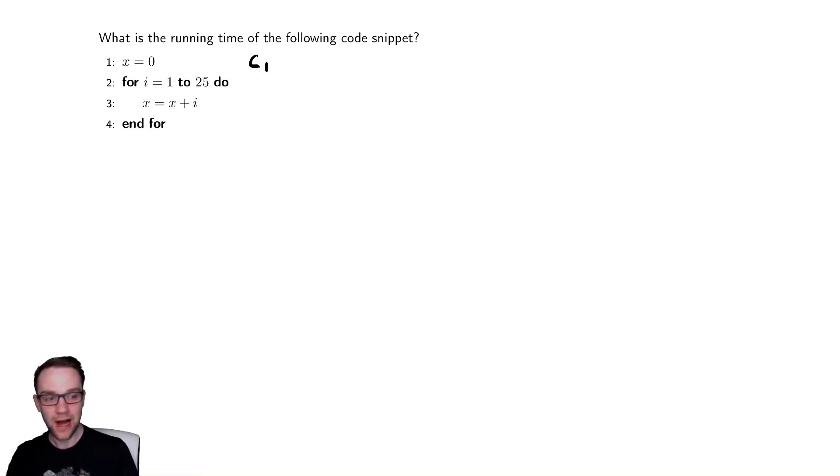You are going to assign I to one on the first iteration so maybe that one is a little different. But then you are going to add one to I then check if it is less than or equal to 25. So that second line of code every execution takes C2 but it executes more than once so we will need to wrangle with that.